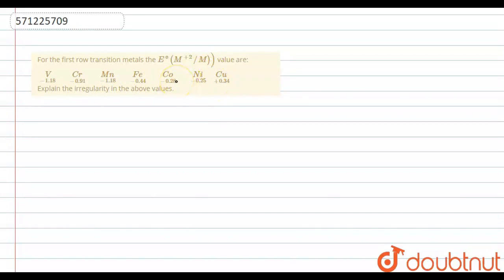We just need to understand why this trend is there, there is no regularity in the trend. We need to give two electrons to V+2. Suppose we need to give two electrons to V+2, so the electrode potential associated with this is -1.18.